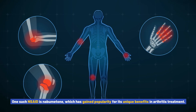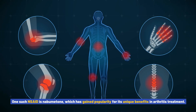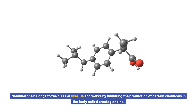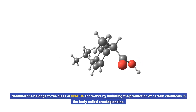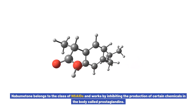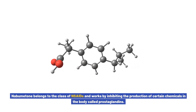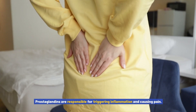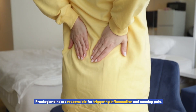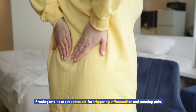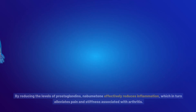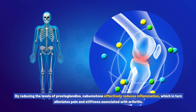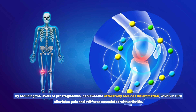One such NSAID is nabumetone, which has gained popularity for its unique benefits in arthritis treatment. Nabumetone belongs to the class of NSAIDs and works by inhibiting the production of certain chemicals in the body called prostaglandins. Prostaglandins are responsible for triggering inflammation and causing pain.